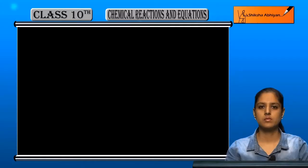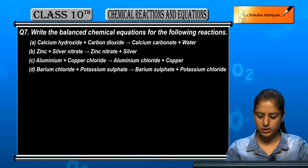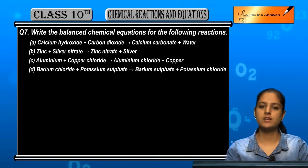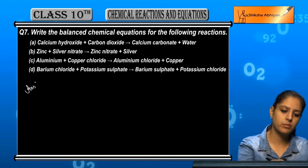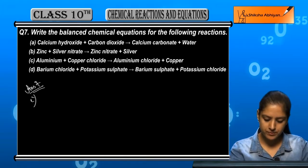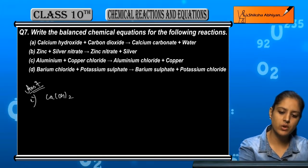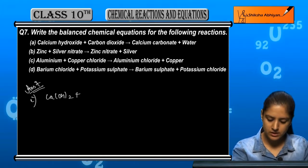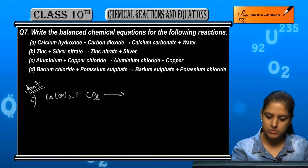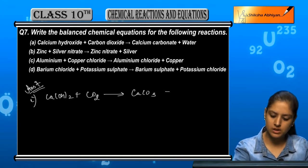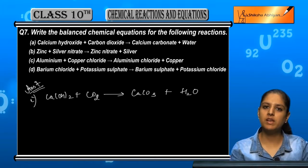Question number seven: write the balanced chemical equations for the following reactions. Starting from number one: calcium hydroxide Ca(OH)₂ plus carbon dioxide CO₂ gives calcium carbonate CaCO₃ plus water H₂O. We have all the formulas, now let us balance them.